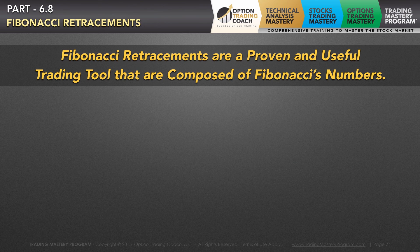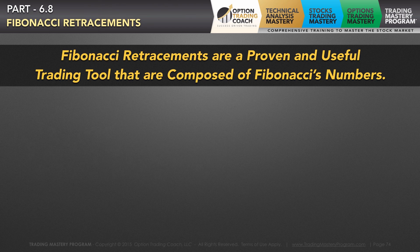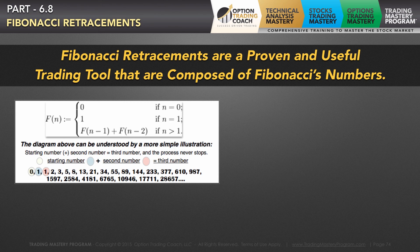Fibonacci retracements are a proven and useful trading tool composed of Fibonacci numbers — natural recurring patterns. If you add subsequent numbers together, they equal the next following number: 0 plus 1 is 1, 1 plus 1 is 2, 2 plus 1 is 3, 3 plus 2 is 5, 5 plus 3 is 8, 8 plus 5 is 13, 13 plus 8 is 21 — and you can keep going down the list. Honestly, I call it a freak of nature.